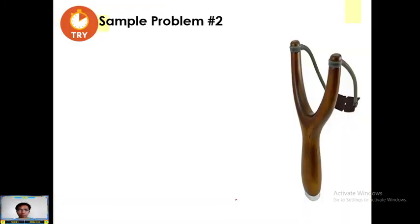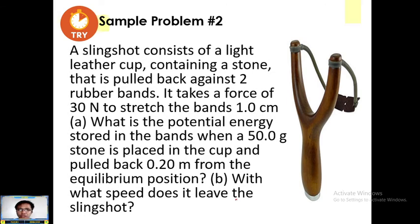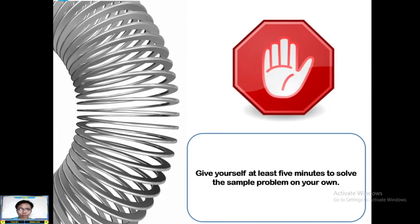Let us solve the second problem. A slingshot consists of a light leather cup containing a stone that is pulled back against two rubber bands. It takes a force of 13 N to stretch the bands 1.0 centimeters. A. What is the potential energy stored in the bands when a 50 gram stone is placed in the cup and pulled back 0.20 meters from equilibrium position? B. With what speed does it leave the slingshot? In solving this problem, I want you again to pause the video and give yourself at least 5 minutes to solve the sample problem on your own. Solve it again before you proceed to the solution. Are you done? Let's proceed to the solution.